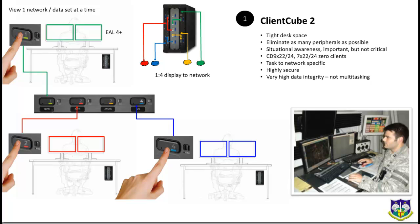Push the third button, then the third network is active. You don't have visibility to all four networks at once, and that's the distinguishing point about this particular use case. It's used in places like Cheyenne Mountain, where tasks are very singular — you've got one job to do, and that's the job you focus on. The attributes important to recognize: the ClientCube 2 in this instance is perfect for tight desk space, eliminates as many peripherals as possible, and delivers situational awareness. It's tasked to network specific, highly secure, with very high data integrity, because there's very little chance of accidentally inputting data into a different system.